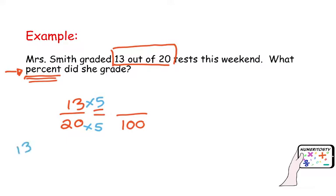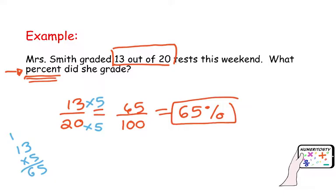If you don't know how much is 13 times 5, you can do your multiplication here quickly by the side. 5 times 3 is 15. 5 times 1 is 5. Plus 1 is 6. So, this will be 65 hundredths. So, now that you have your fraction over 100, you just eliminate the denominator and add your percent symbol. 65 percent is what she graded.